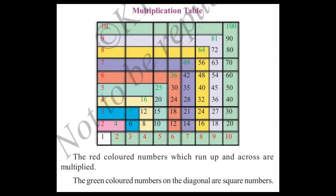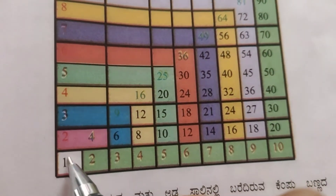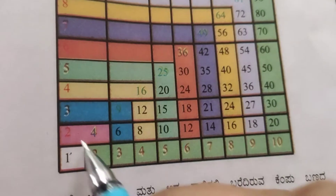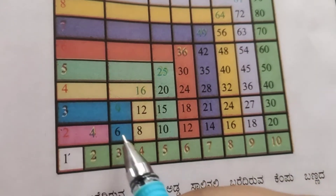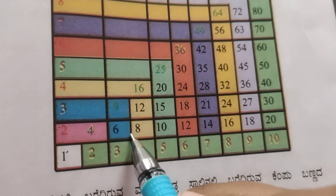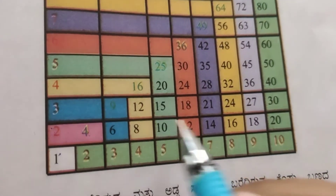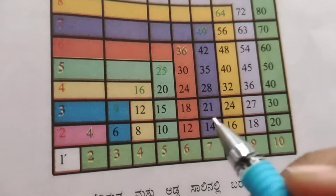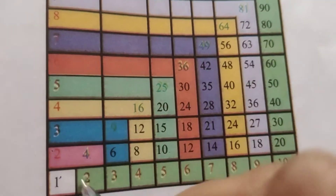Observe the multiplication table. We mark: 4 times 2 is 8, 5 times 2 is 10, 6 times 2 is 12 — and so on along the diagonal.